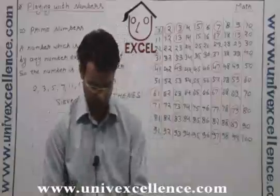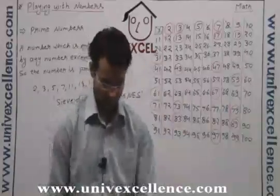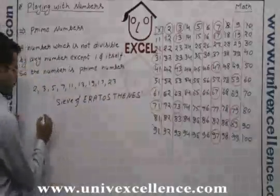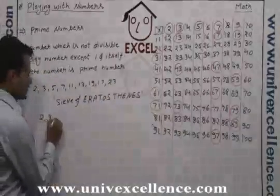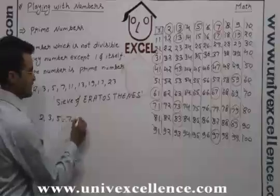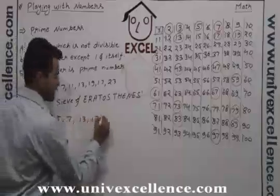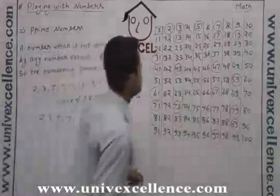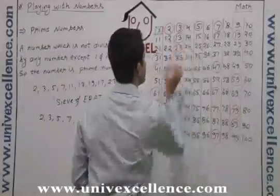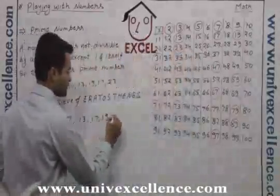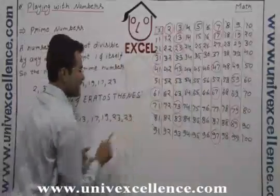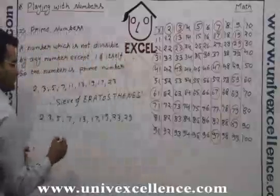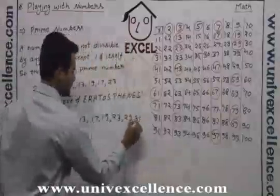So let's write down those numbers. The numbers are 2, 3, 5, 7, 11, 13, 17, 19. One is left — this is 23. 23, 29.